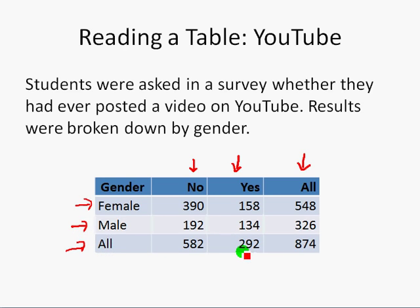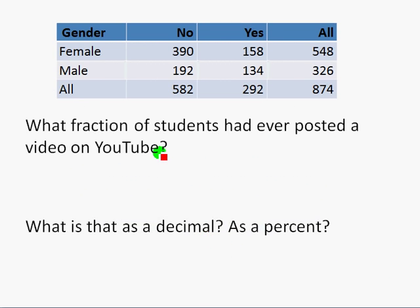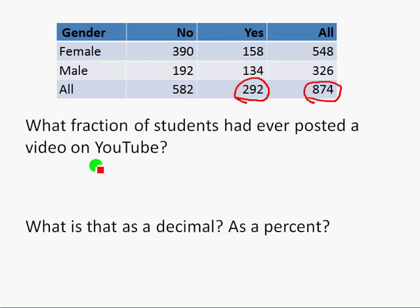This table tells us there were 874 people in all who had been surveyed. What fraction of the students surveyed had ever posted a video on YouTube? Those are the people in the yes column — not asking about gender — so that's going to be 292 people out of 874. We write that as the fraction 292 out of 874.